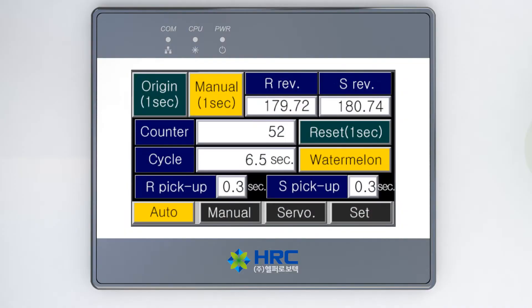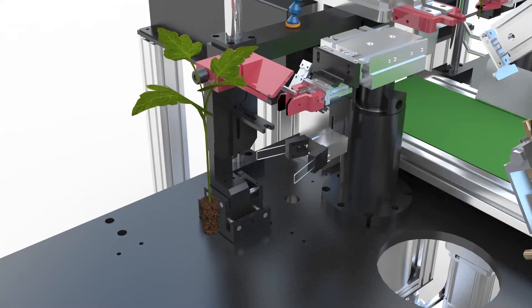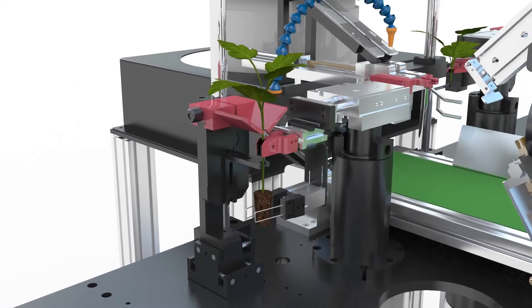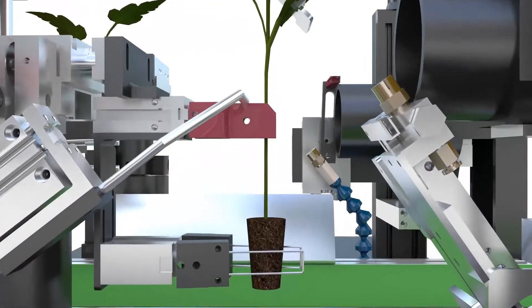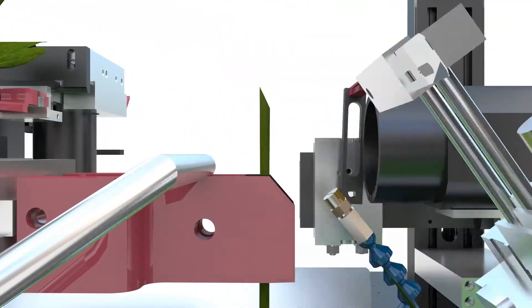For Solanaceae, select the Solanaceae on the touch screen and the same process will be applied as for Cucurbitaceae. It is most desirable in the case of Solanaceae to graft 10 to 20 millimeters under the lowest leaf.